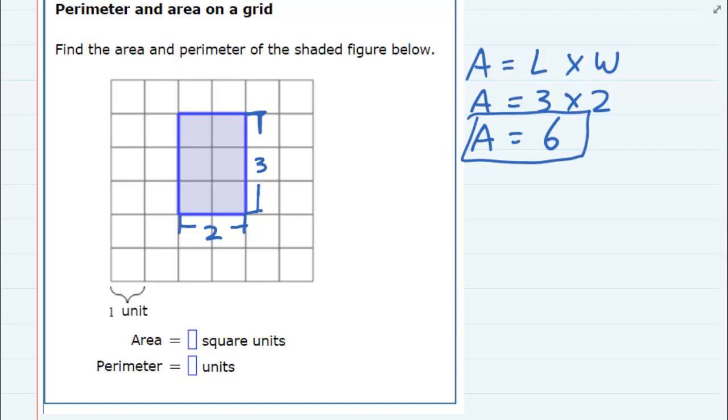But then to find the perimeter, we need to add up all the distances, all the lengths, for each side of the shape, and we've already got a couple of them listed here, but I'm going to go ahead and add the other two.